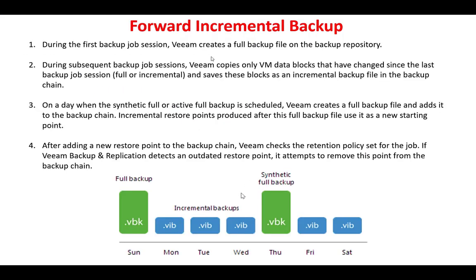The second method is forward incremental backup. The forward incremental backup and the forever forward incremental backup are the same, but the difference is that in forward incremental backup we have a synthetic backup. For example, suppose we have a full backup on Sunday and a full backup on Thursday. If a disaster occurs on Tuesday, we only need to restore three backups: Sunday, Monday, and Tuesday. So the restoration process is simpler and takes less time compared to forever forward backup.